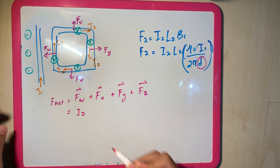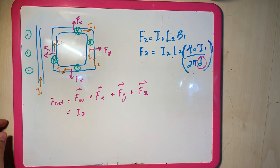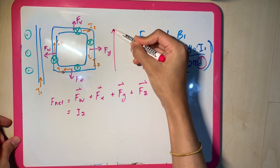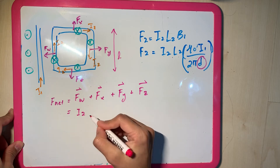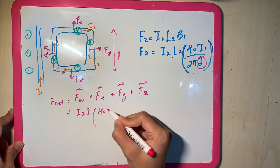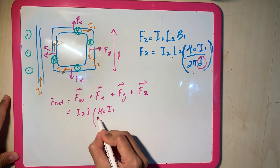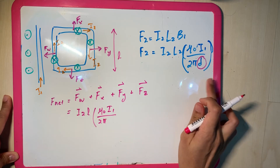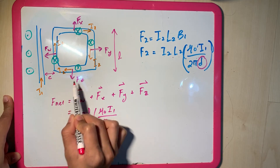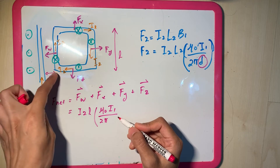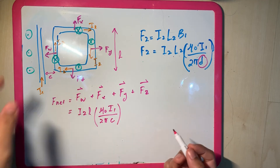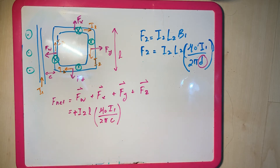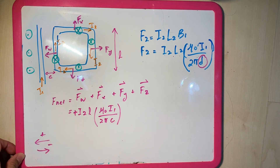Let's start with FW. FW = I2 · L2 · (μ0·I1 / 2π·C), where L2 is the length of that side and C is the distance from wire 1 to the near side of the loop. I'm going to say to the left is positive, so FW is positive since it goes to the left.